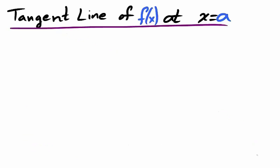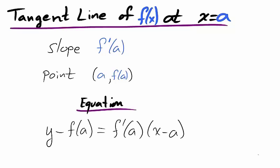We know how to describe the tangent line of a function f at the x value a. It is a line which passes through the point a, f of a, and has the slope f prime of a. Writing the equation of the tangent line in point slope form, we have that y minus f of a equals f prime of a times x minus a.